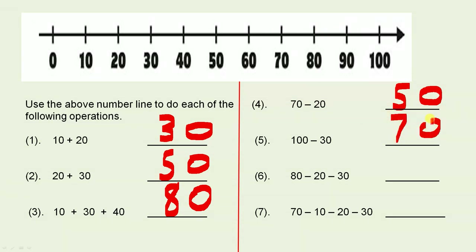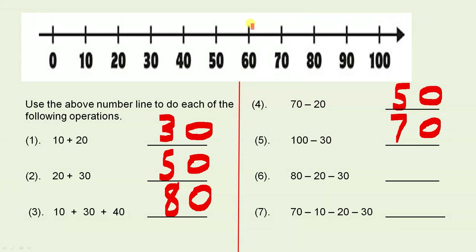We're nearly finished. Eighty minus twenty minus thirty. Put your pencil on the eighty. Minus twenty: ten, twenty. Then minus thirty: ten, twenty, thirty. We've landed on the thirty, so that is the answer.